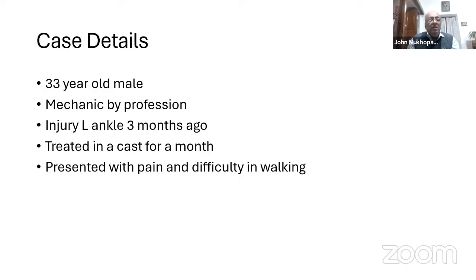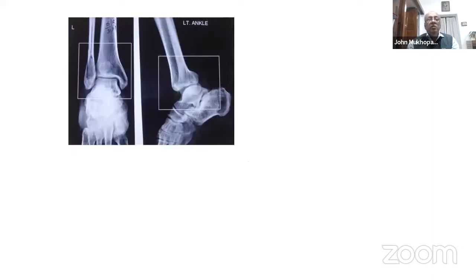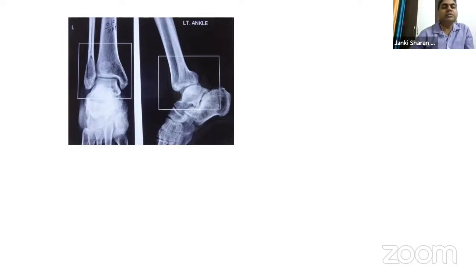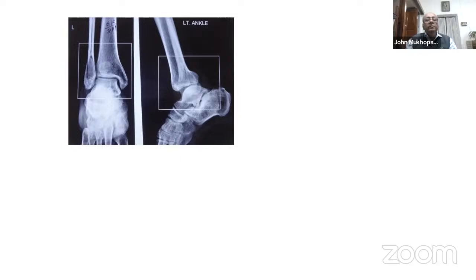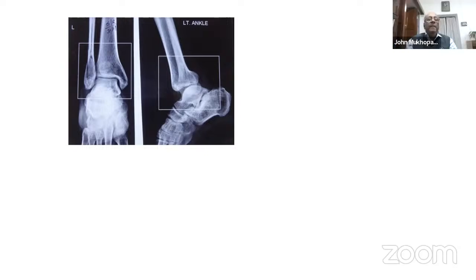He's a 33-year-old male mechanic who had an injury to his left ankle three months ago. He was treated in a cast for a month — a reduction plaster as he was told — and was told it was okay. But when the cast came off, he had pain, and three months later he was still unable to walk properly. Looking at the x-rays: there's a lateral malleolar fracture, a syndesmotic injury, and a posterior subluxation of the talus.